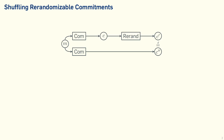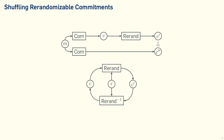The second property we need is inverse re-randomizability, which means that if we have a commitment and we re-randomize it using randomness R, then there is a procedure to undo this. Basically, the inverse re-randomization — if we use the same randomness to inversely re-randomize — then you get back to the original commitment. For shuffling arguments to be useful you would still probably need some kind of hiding property, but for our definitions and construction, only these two properties are necessary.